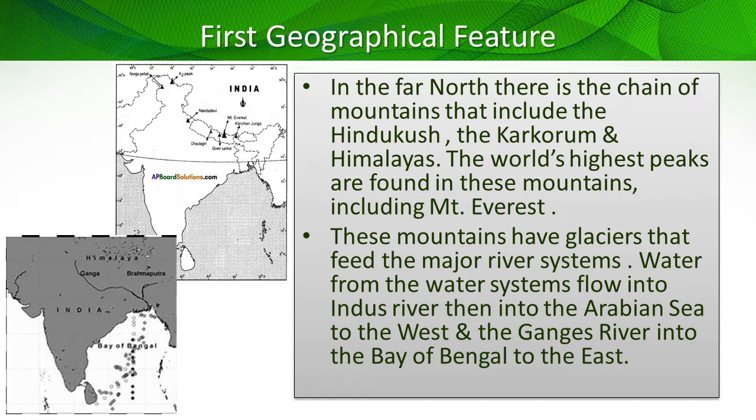These mountains have glaciers that feed the major river systems. Water flows into the river Indus and then into the Arabian Sea to the west, and into the Ganges River into the Bay of Bengal to the east. Most of the mountains are snow-clad for most of the year, and when summer arrives the glaciers start melting, giving water to the Indus River. The Indus River is said to be the longest river in Asia at 2,000 miles in length — on the west side it joins the Arabian Sea, and on the eastern side it joins the Bay of Bengal.